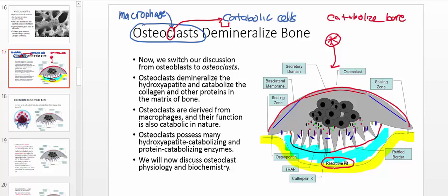Also located on the bone itself we have proteins called osteopontin. These proteins are phosphoproteins, meaning they have phosphates on them. There is a point on the osteoclast called the sealing zone, and the area around the sealing zone hooks onto those phosphates of osteopontin. This is the mechanism by which the osteoclast literally attaches itself to the bone.